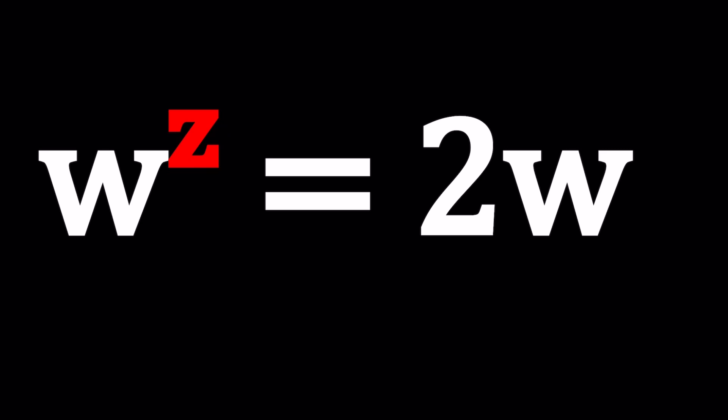Now we've done a similar problem before, an exponent that doubles. Remember we had i to the z equals 2i but this is kind of like a generalization of that problem. I replace i with w, another complex number. So we're going to have an exponent that doubles again but in a more general sense.